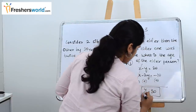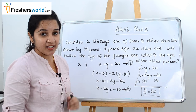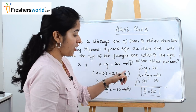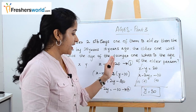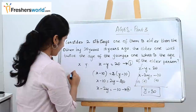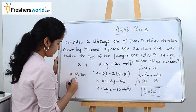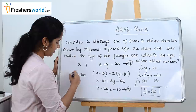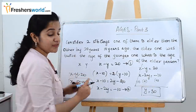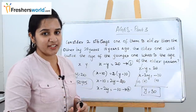So y equals 30, which is the younger sibling's age. But the question asks for the elder person's age. We know x minus y equals 20, so x equals y plus 20 equals 30 plus 20 equals 50. The age of the elder sibling is 50 years.